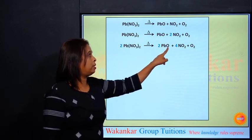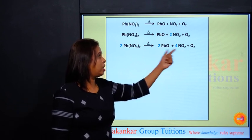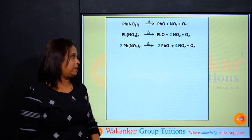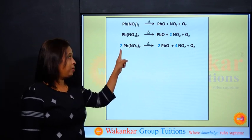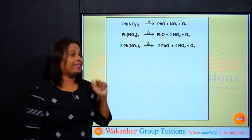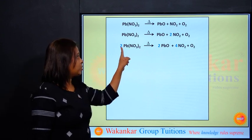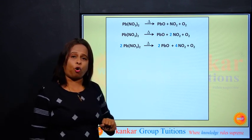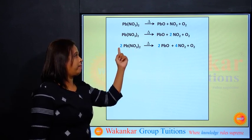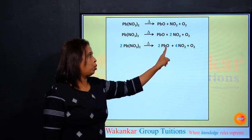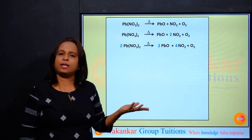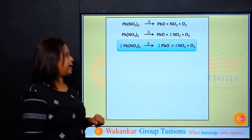Check it whether on the right hand side I am having 12 or not. 2 oxygen, 2. 4 times 2, 8. 2 plus 8, 10 ho gaye, plus 2, 12 ho gaye. I repeat. When I multiplied here by 2, I also multiplied here by 2 so that Pb becomes 2 over here, 2 over here. Then nitrogen is 2 times 2, 4, so I multiplied here by 4 so that nitrogen becomes 4. What is oxygen? 3 times 2, 6. 2 times 6, 12. Check it over here. 2 PbO, 2 O. 4 times 2, 8 O. 2 or 8, 10, and 2, 12. Easy, right? So this is your final equation.